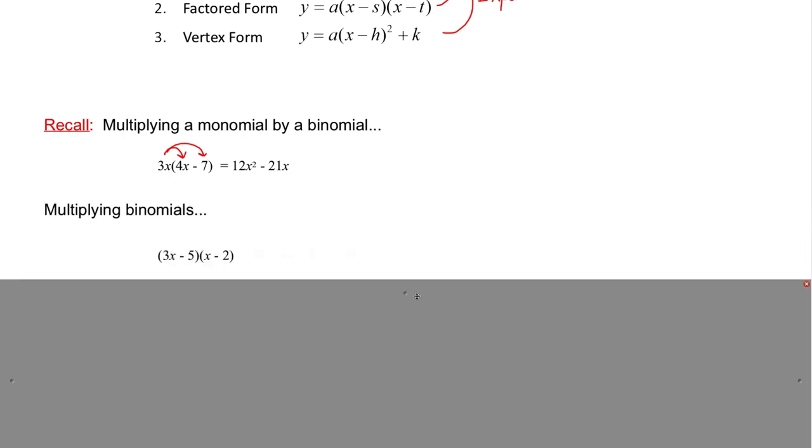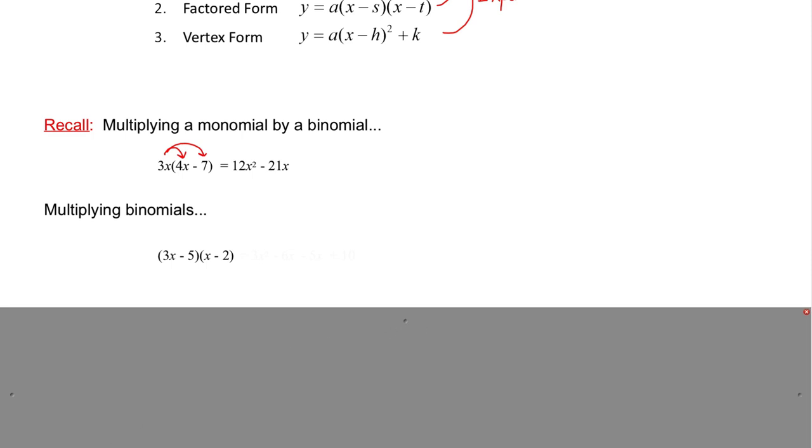This would be our standard form with nothing on the end. So our c would be 0. Now just to go one step further, if you kind of forget how to multiply two binomials, it's very, very similar. We're going to take everything in the first bracket and step by step multiply it times everything in that second bracket. Extremely similar to what we just did. So let's start with the 3x here. We're going to multiply 3x times x. And when you multiply 3x times x, it's just 3x squared. And then 3x times negative 2. Well, that should also be very simple to do. That's negative 6x. So that's exactly the same procedure we just did above.